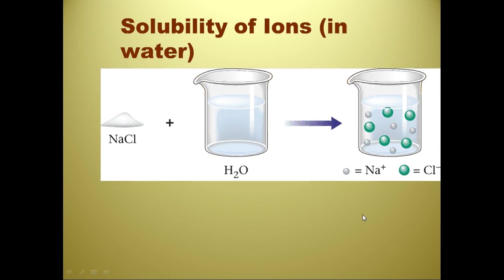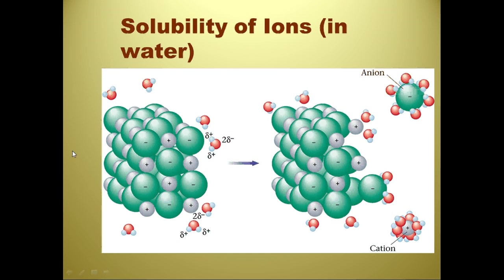Solubility of ions: when we put salt in water, these ions dissociate from each other — sodium and chlorine are separated, so it's sodium ions and chloride ions. What's happening is the water molecules surround the chloride ion — the positive hydrogen portions of water attach to the negative chloride ion and carry it off. The positive sodium ion gets attacked by the negative oxygen portion of the water molecule, gets surrounded, and is also dissociated. This is how polar water dissolves ionic substances.